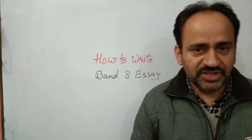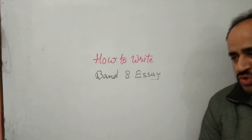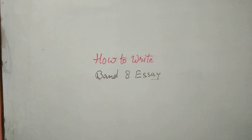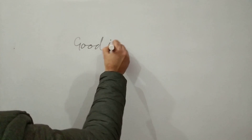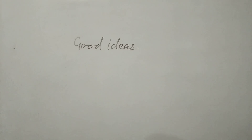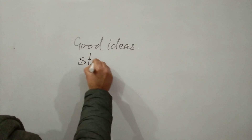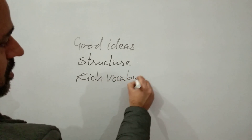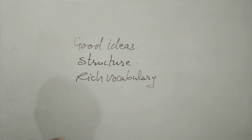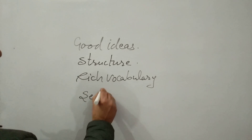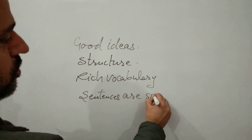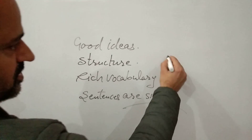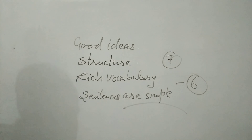So let's see what sentences we should add to get maximum score. Suppose you have good ideas, brilliant ideas, your organization structure is good, and you have added rich vocabulary — suitable words, very important, and high-level words. But after that, if your sentences are simple — you write only simple sentences — you can never get even a 7; your score will be around 6 band. Such is the effect of sentence variety in IELTS writing.